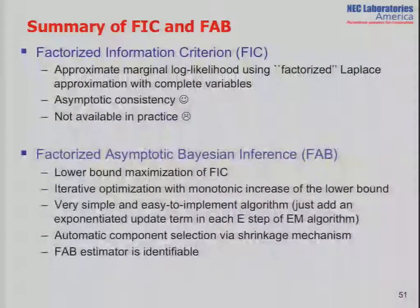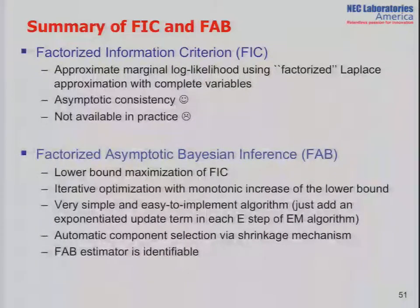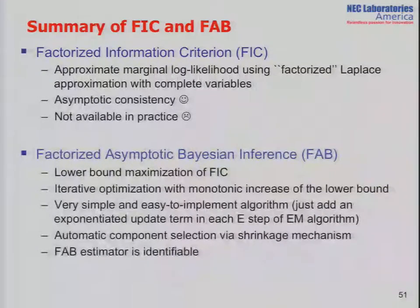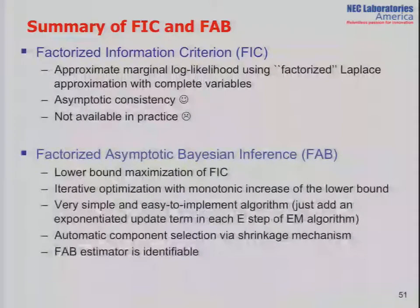To summarize: FIC is an asymptotic approximation of the marginal log likelihood, but it's not available in practice, so we maximize its lower bound. FAB is a very simple algorithm that optimizes the number of components and each component type, and the FAB estimator is identifiable. FAB basically has no hyperparameters — if we set a sufficiently large initial number of components, the rest of the process is done automatically.